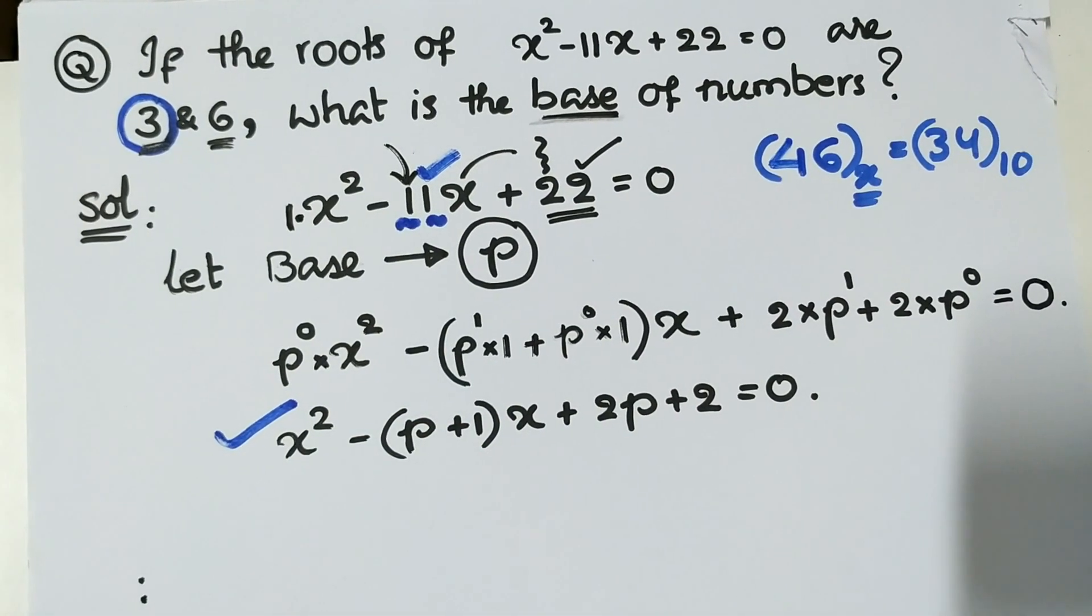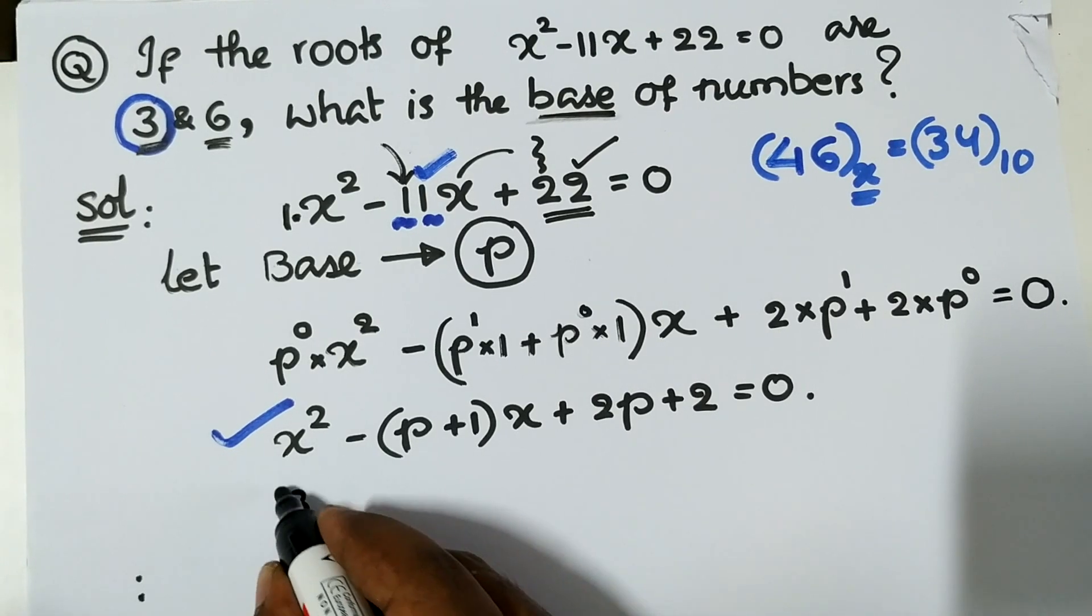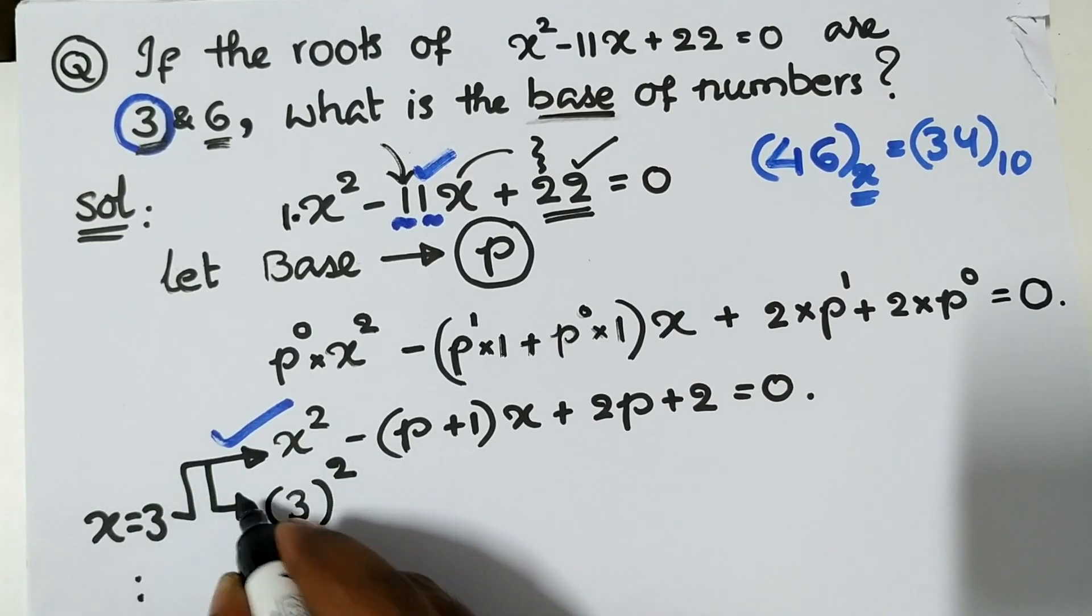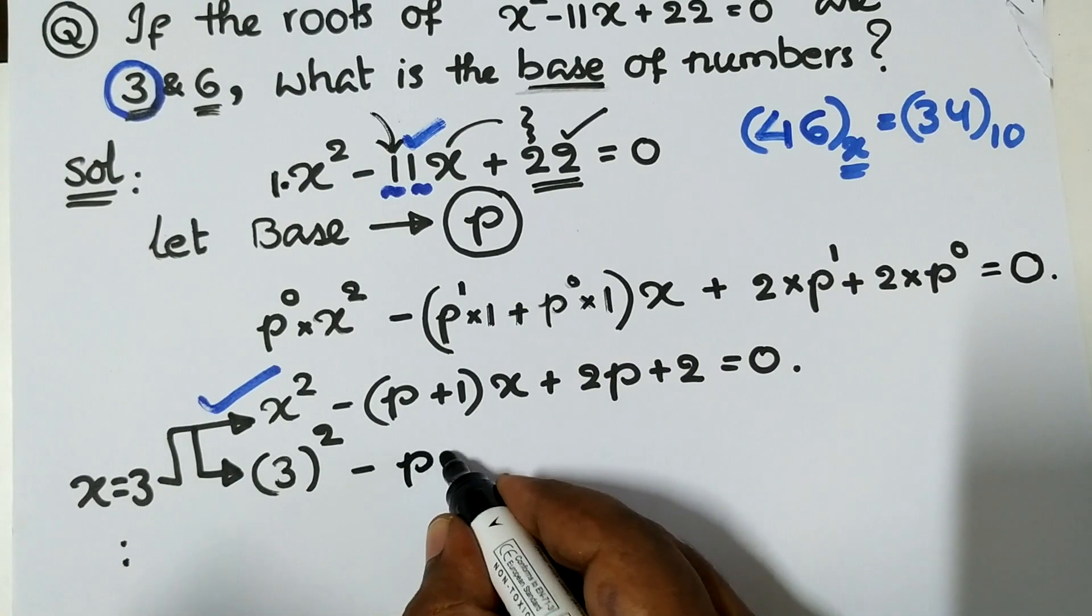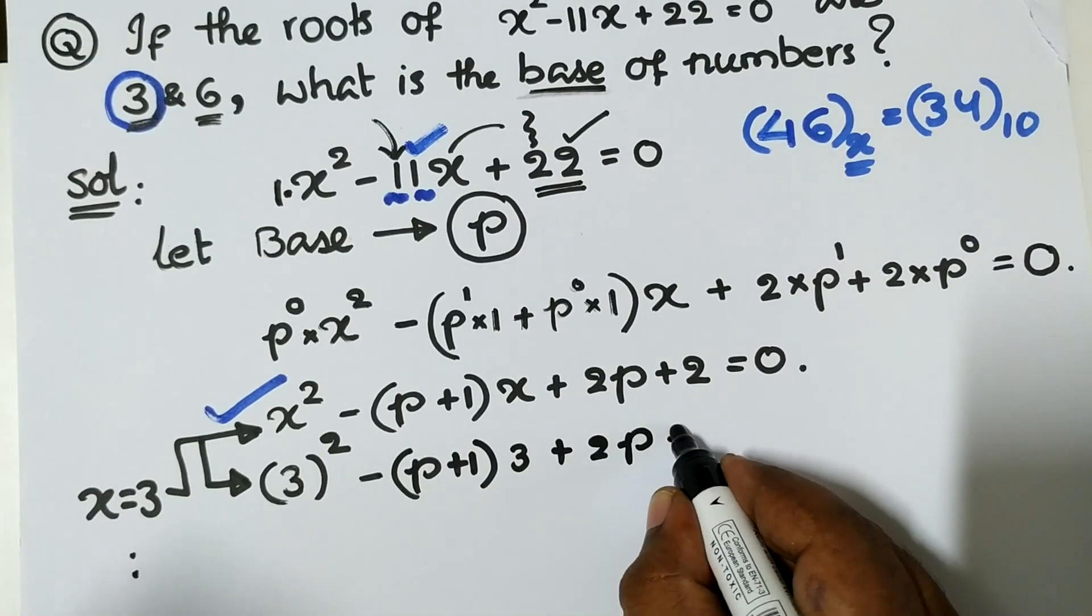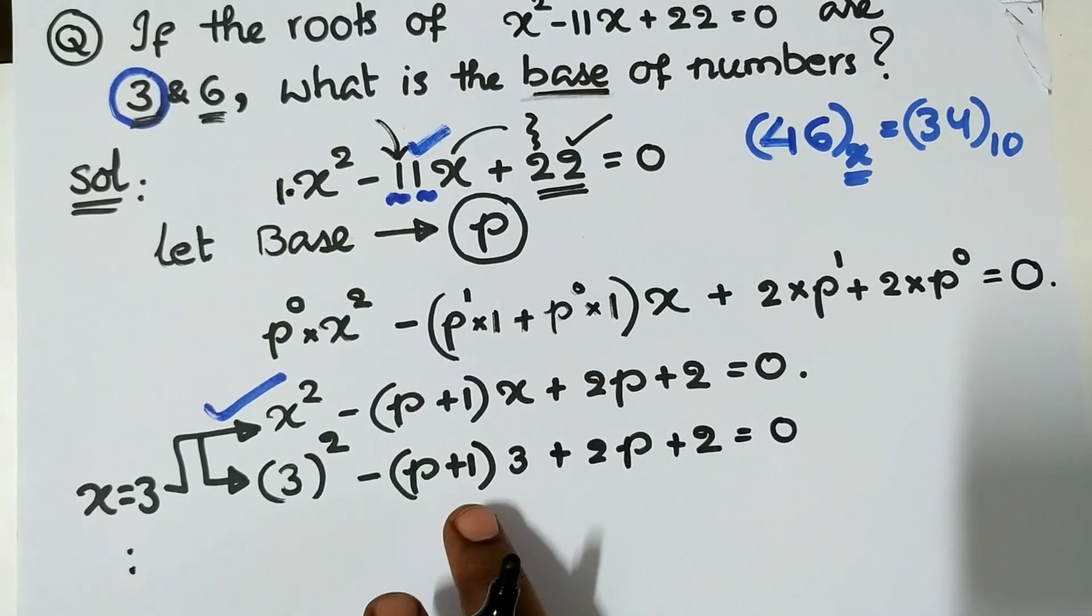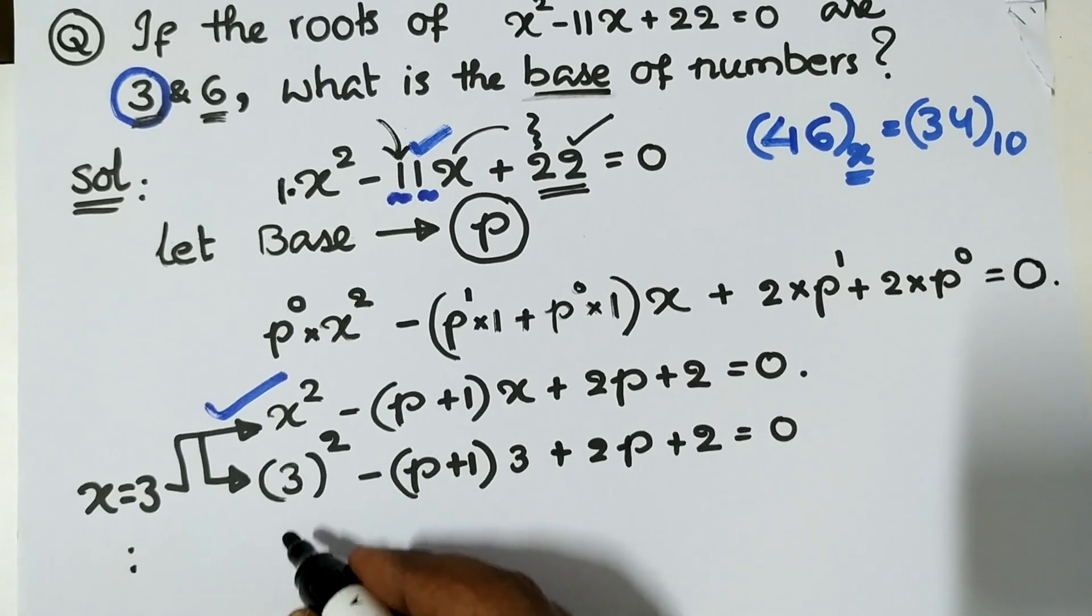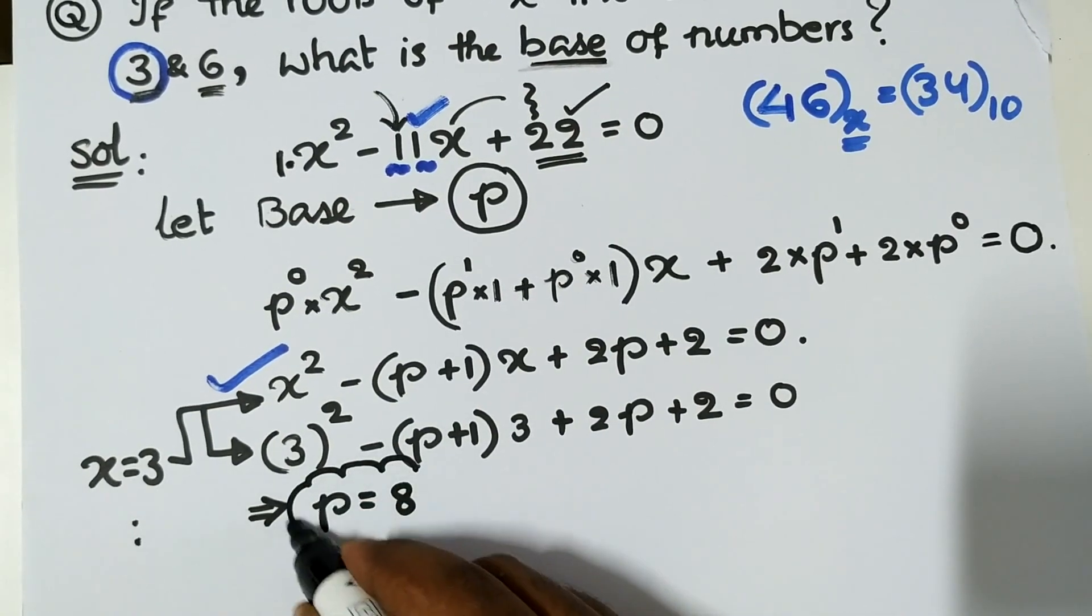Let's try to accommodate x = 3 in this equation. Plugging in x = 3, we get 3² - (P+1)×3 + 2P+2 = 0. So 9 minus this multiplication quantity plus 2P+2 = 0. If you solve this, you would get P = 8.